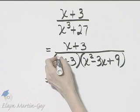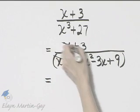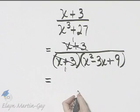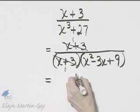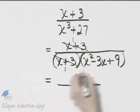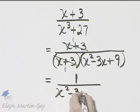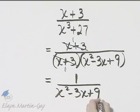Notice there's a common factor of x plus 3, and if I factor them out, what do I have? One in the numerator over x squared minus 3x plus 9.